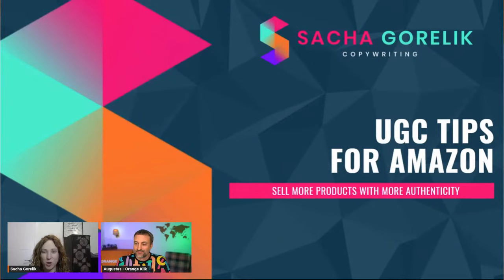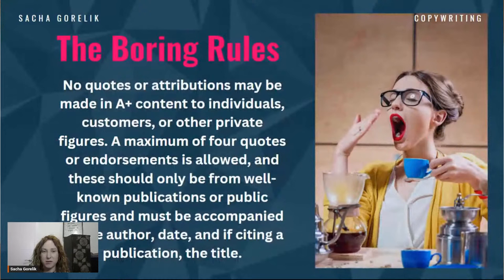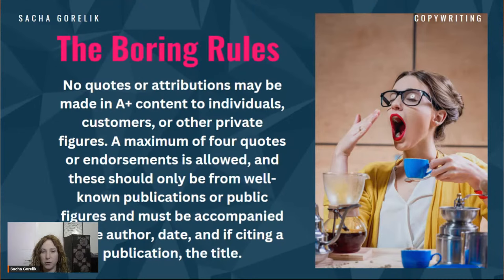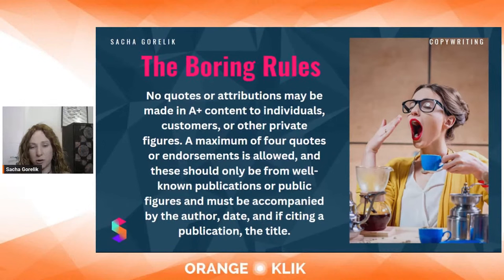I'm going to be talking about how you can sell more products with more authenticity. Before we get started, we have to do the boring stuff, which has come straight from Amazon. This is what they tell you: you're not allowed to have any quotes or attributions to individual customers or other private figures. However, many thousands of sellers are using UGC content. You can have endorsements if you have celebrities, but they have to be well-known public figures. Or if you've won an award, you need to be within date and cite the publication you were featured in.